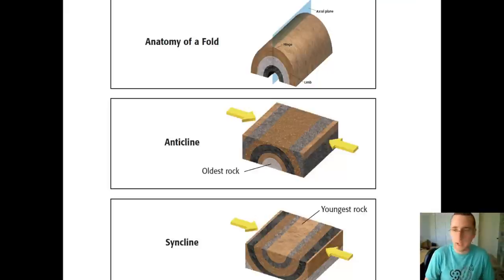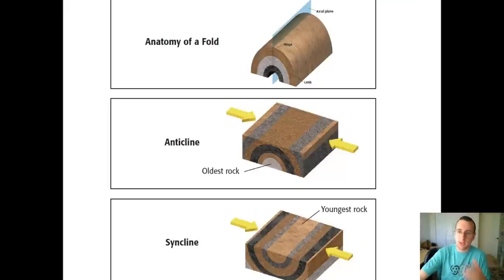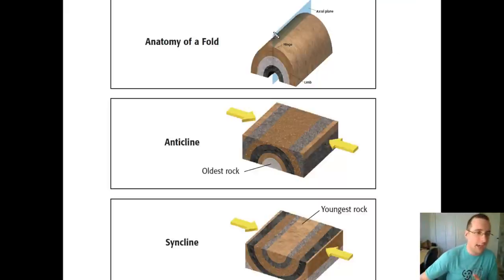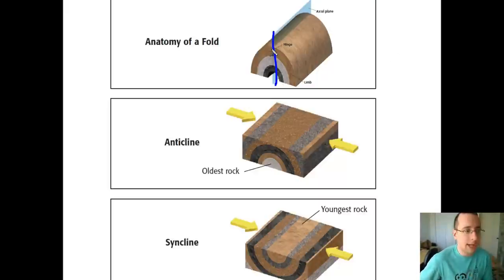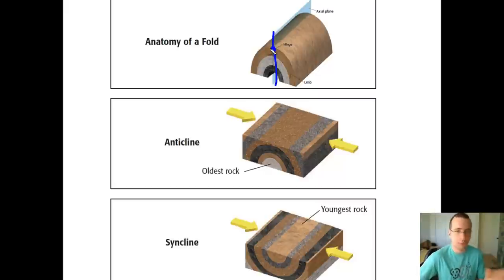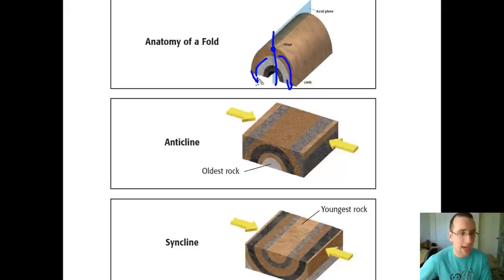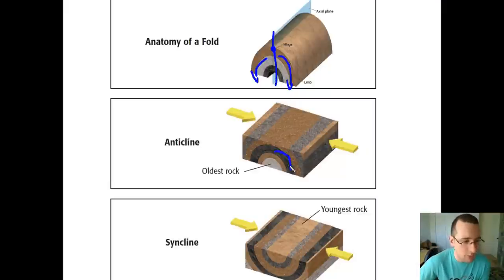When it comes to the actual anatomy of the fold, it has three basic parts. The actual plane is the area that cuts the fold in half. Along that half, you usually find the hinge — the location from which the fold starts. Extending from that hinge, you have the limbs of the rock, which in this case are folding downwards. Whenever the folds are downwards like that, we call that an anticline.